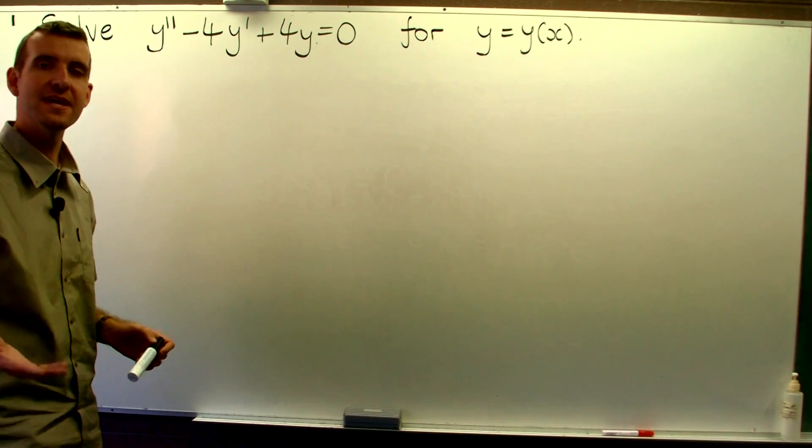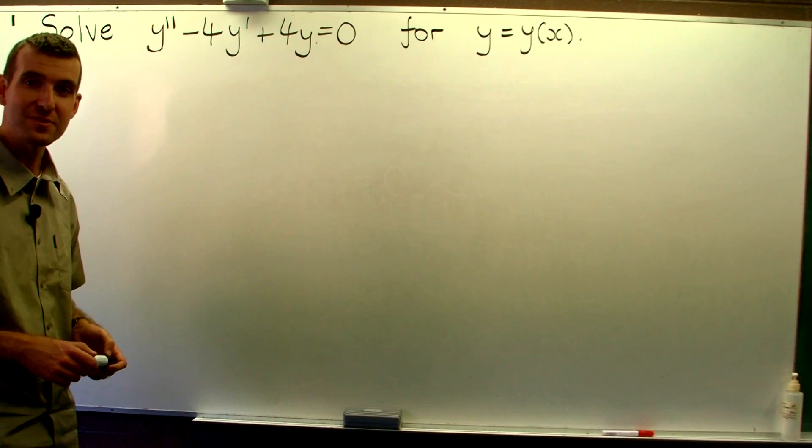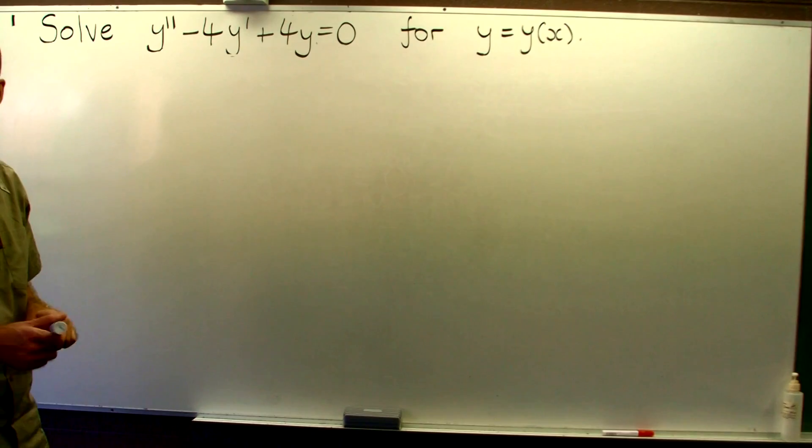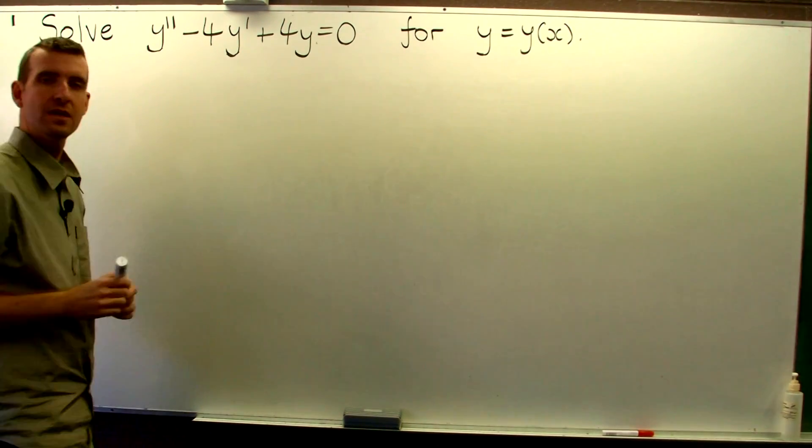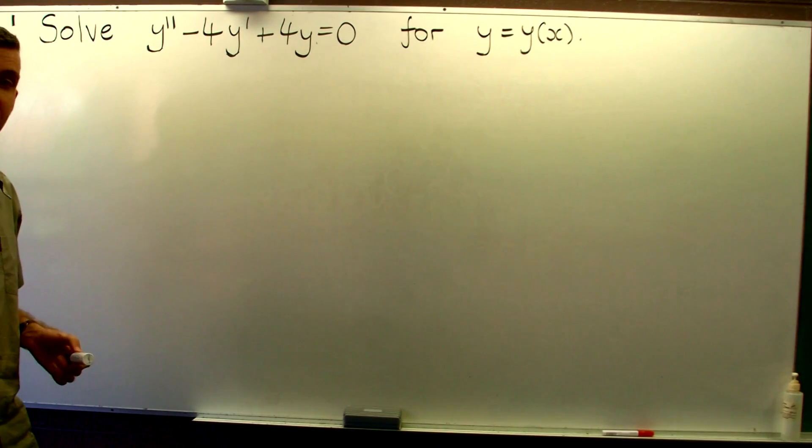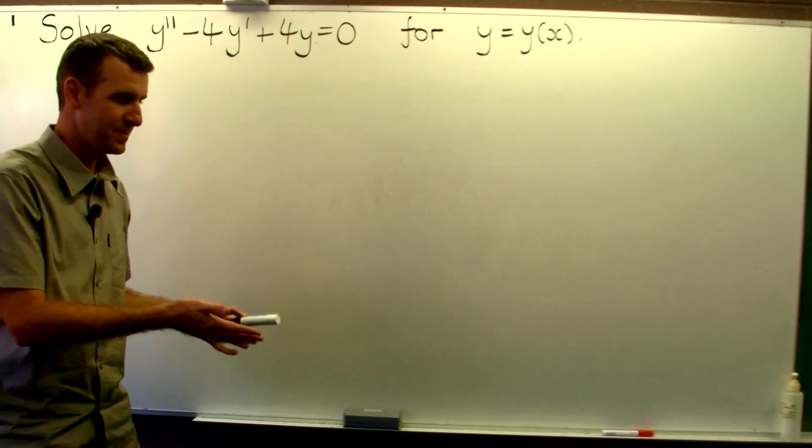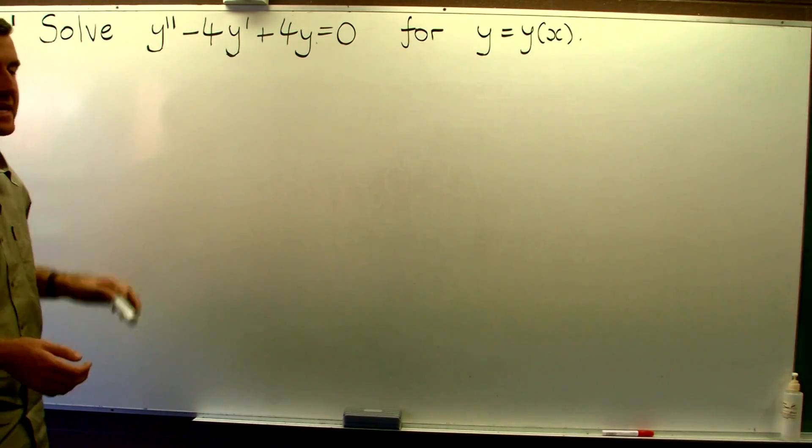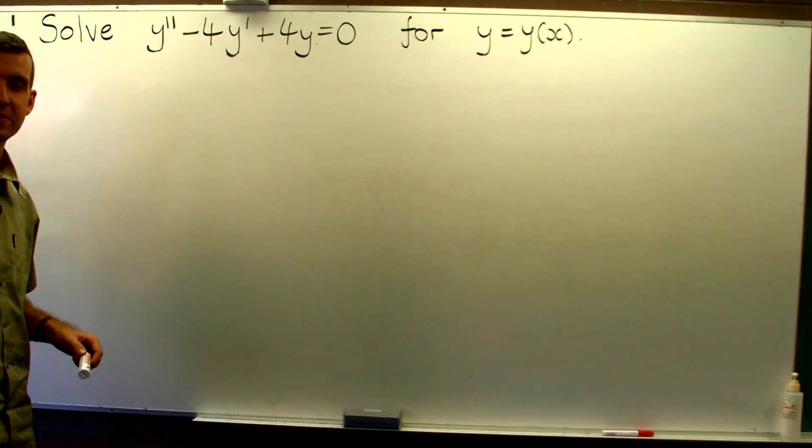So how do we do it? The standard procedure with these kinds of problems is to write down the characteristic equation associated with our ODE. In this particular case, it will be a quadratic. What you then do is solve the quadratic and find the roots, and then you look and see, are the roots real and equal? Are they real and unequal? Are they complex? For this case, the roots are real and equal, and that gives you a particular form of the general solution.